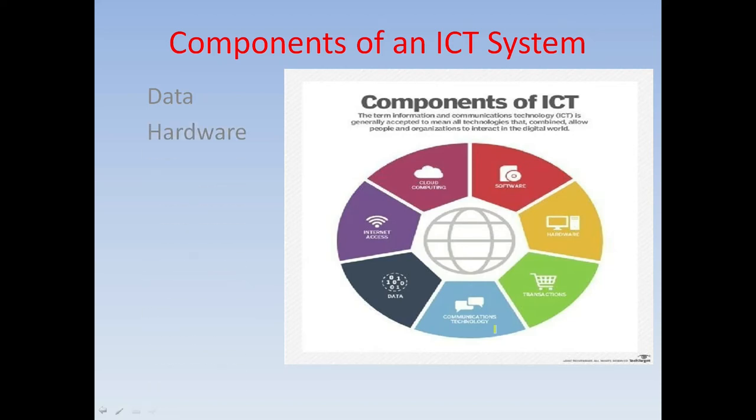The next one is hardware. Hardware are the physical components of the computer that we can see or touch, like the monitor, keyboard, mouse, printer. These are all hardware.